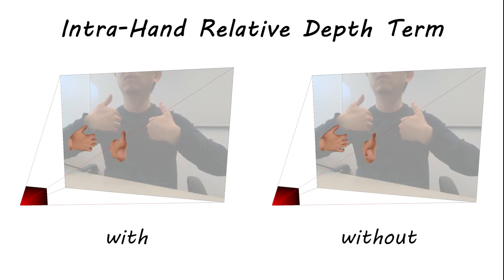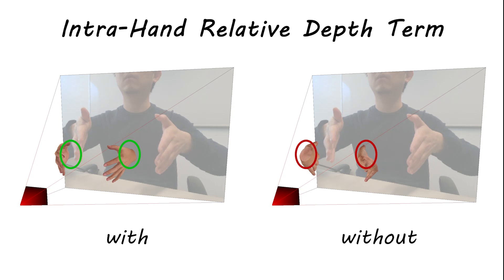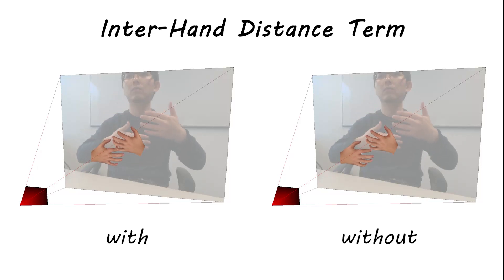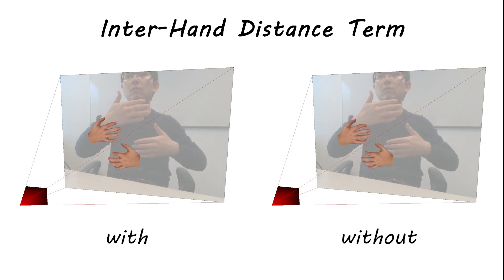Without the intra-hand relative depth term, it is harder to distinguish between bending the hand forward and backward. Without the intra-hand distance term, the order of the hands along the camera viewing direction is estimated incorrectly. We emphasize again that obtaining a correct relative positioning of the two hands is crucial for accurately reconstructing two-hand interactions.